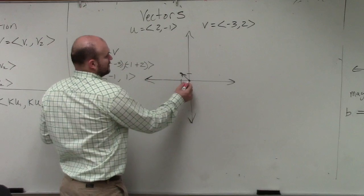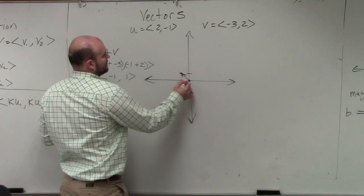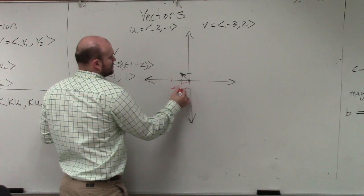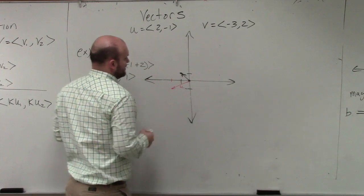Let's graph 2, negative 1. So if I graph 2, negative 1, that'd be over 2, down 1. So that is u.